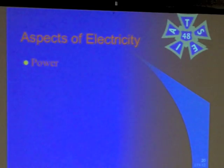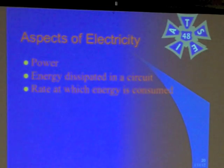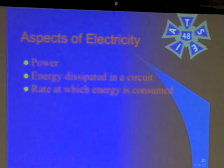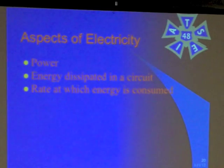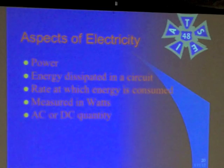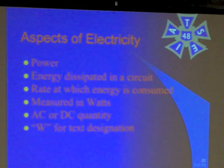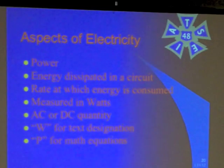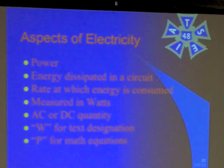The last aspect is power. Power is the energy dissipated in a circuit — the amount of work that's getting done. It's also the rate at which energy is consumed in a circuit. You'll see something has so many watts: 60-watt light, 100-watt light — that's the rate at which energy is consumed by that device. It's measured in watts. W is used in text, and P is used for math equations.